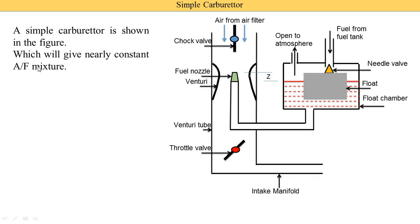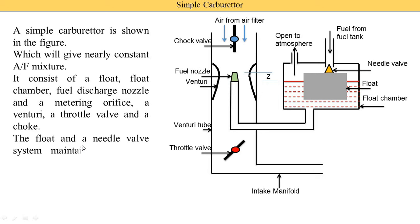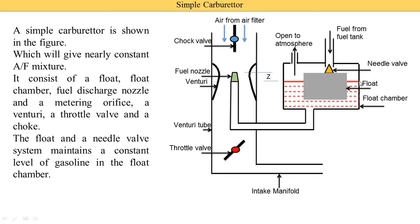A simple carburetor gives a nearly constant air-fuel mixture — the proportion of air and fuel mixture is constant. It consists of a float, float chamber, fuel discharge nozzle, metering orifice, venturi, throttle valve, and choke valve. The float and needle valve system maintains the constant level of gasoline in the float chamber.